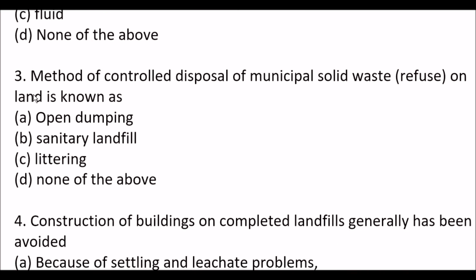Next question: method of controlled disposal of municipal solid waste on land is known as — option A, open dumping; option B, sanitary landfill; option C, littering; option D, none of the above. Right answer is option B, sanitary landfill.